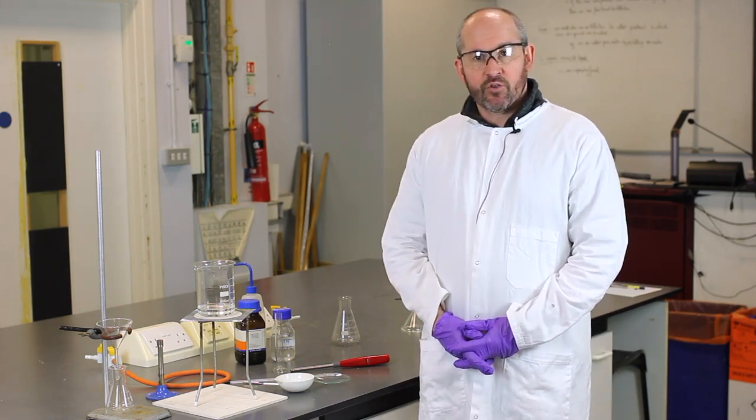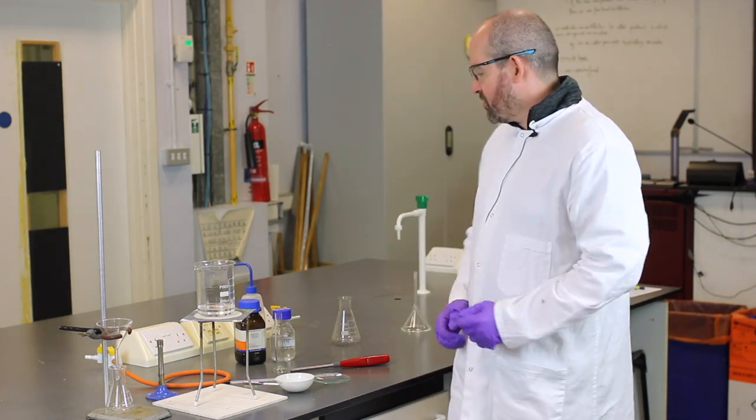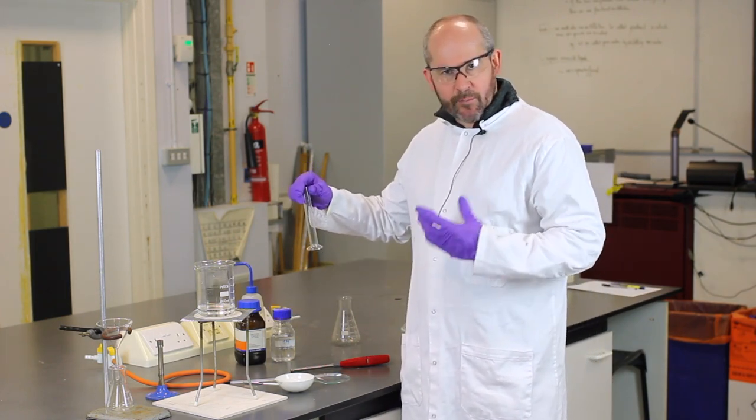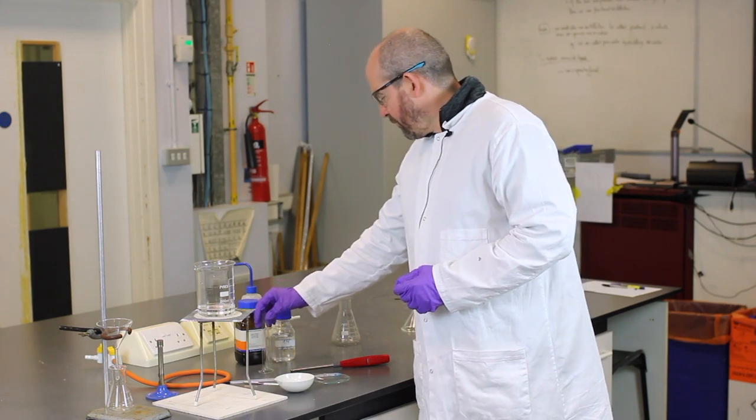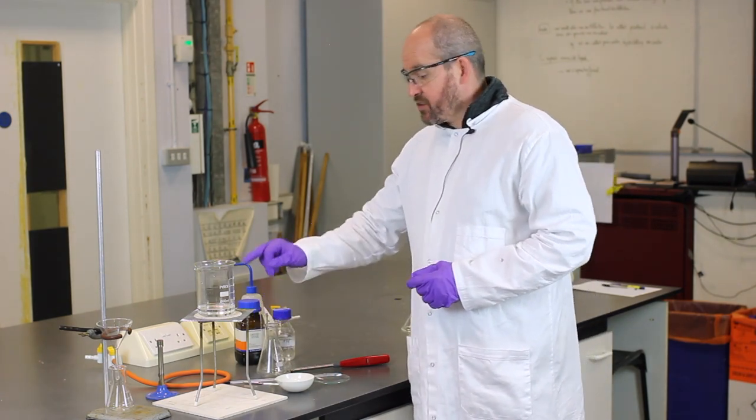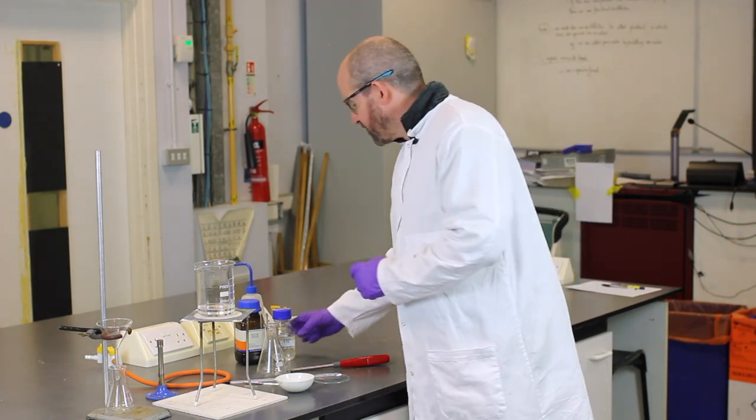So to begin with, what we will do is measure out the volume of acid we require, which is 100 centimetres cubed. So I've got a 25 centimetre cubed measuring cylinder here, so I'm going to have to use it four times, and I'm going to place it in this conical flask. Eventually that conical flask is going to be put in a water bath, but let's get the acid sorted out first.